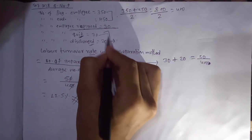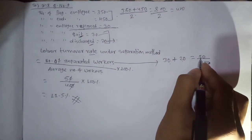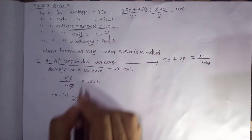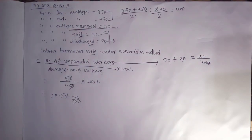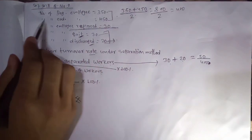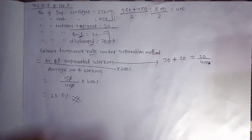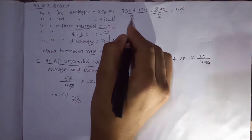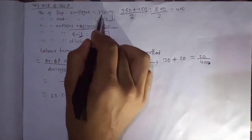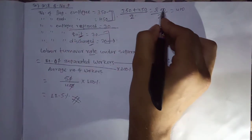The average number of workers is the number of beginning employees plus the number of ending employees divided by 2. So the average number of beginning employees plus ending employees divided by 2: beginning employee is 350, ending employee is 450, total is 800 divided by 2.